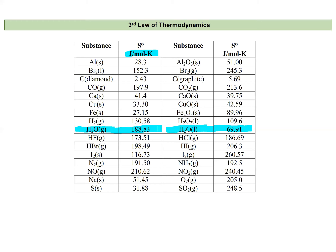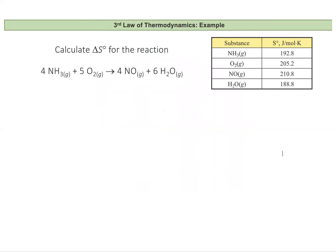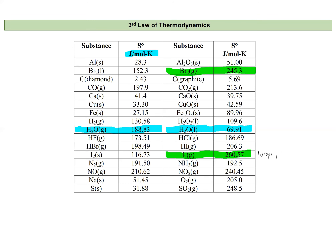Let's compare substances with different molar masses: bromine gas versus iodine gas. Iodine has a larger entropy than bromine gas. Iodine is also a larger atom with a larger molar mass than bromine. We see that the larger an atom is, the larger its entropy compared to something smaller.